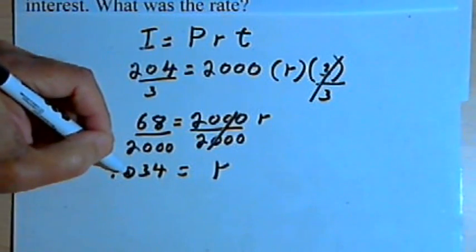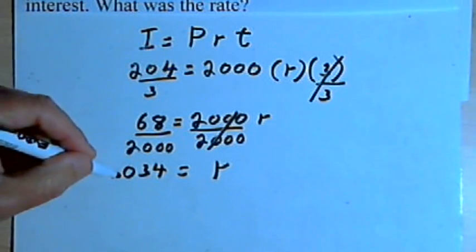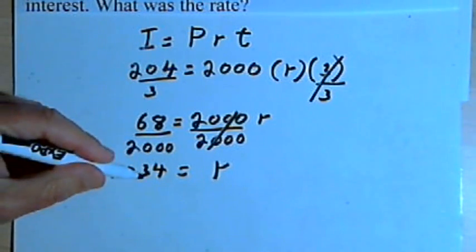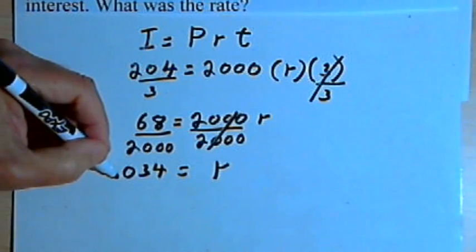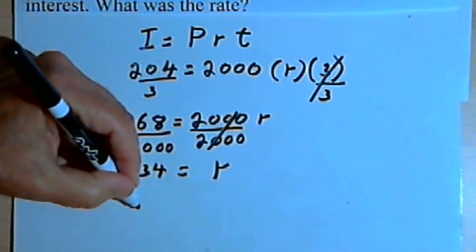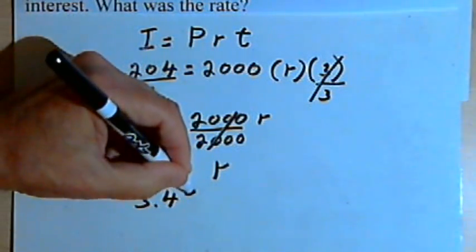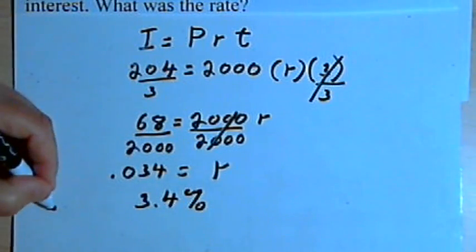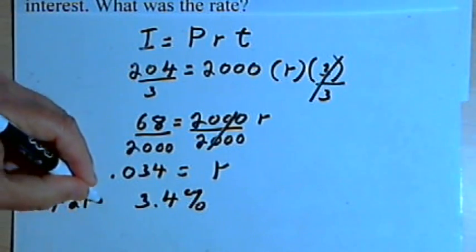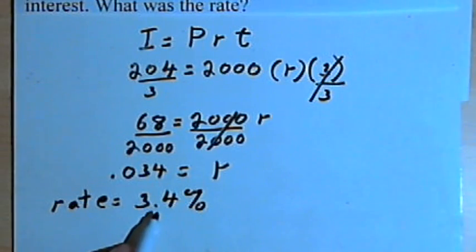Now, since rates are normally stated as a percent, we probably want to turn this 0.034 into a percent. I'll do that by multiplying it by 100, that's 3.4, and adding a percent sign. So the rate equals 3.4 percent.